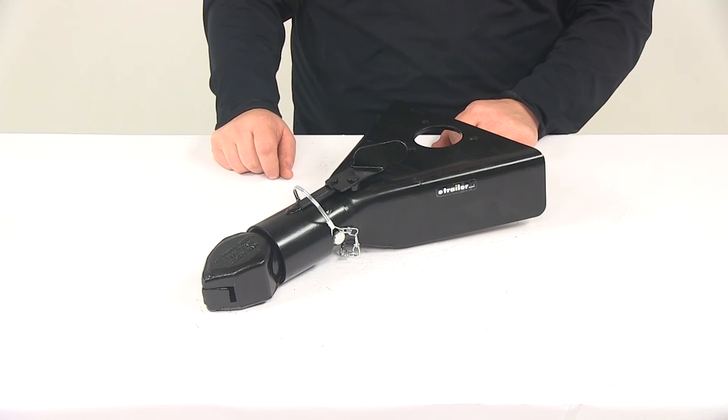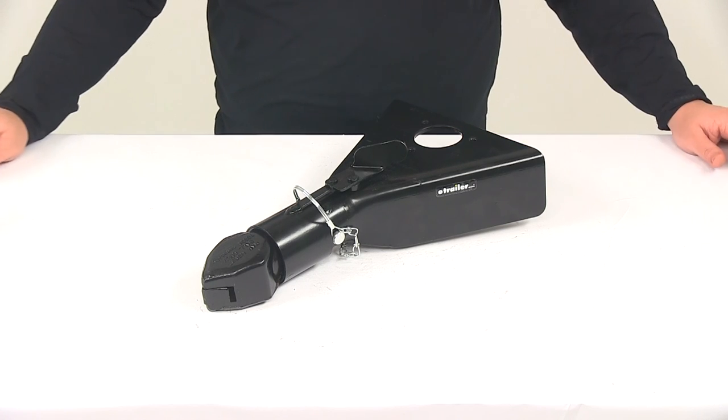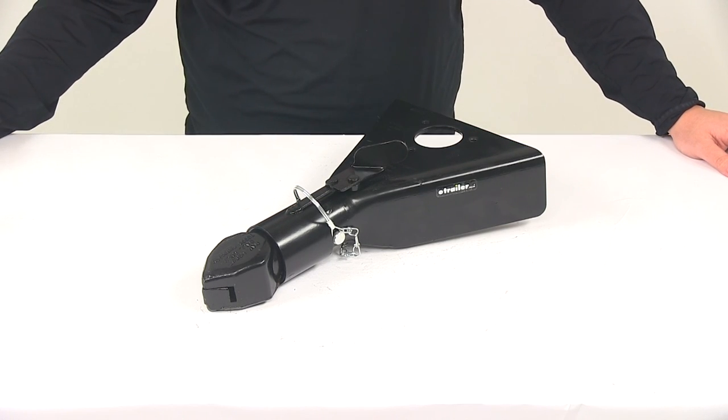If you're in need of a coupler lock, they are sold separately and you can find them right here at eTrailer.com. That's going to do it for today's look at the A-frame trailer coupler for a two inch hitch ball.